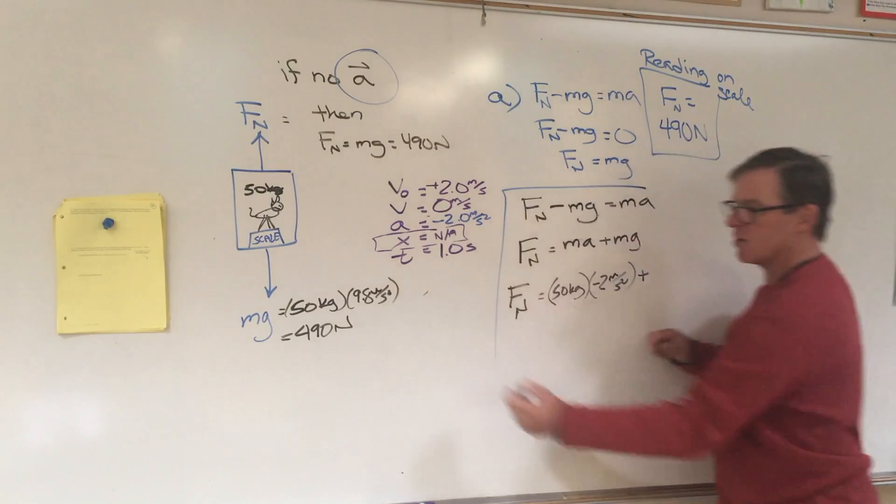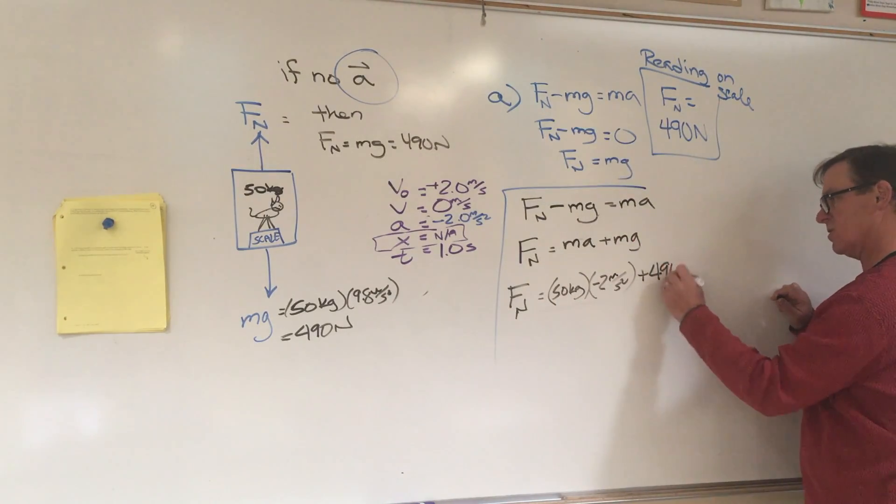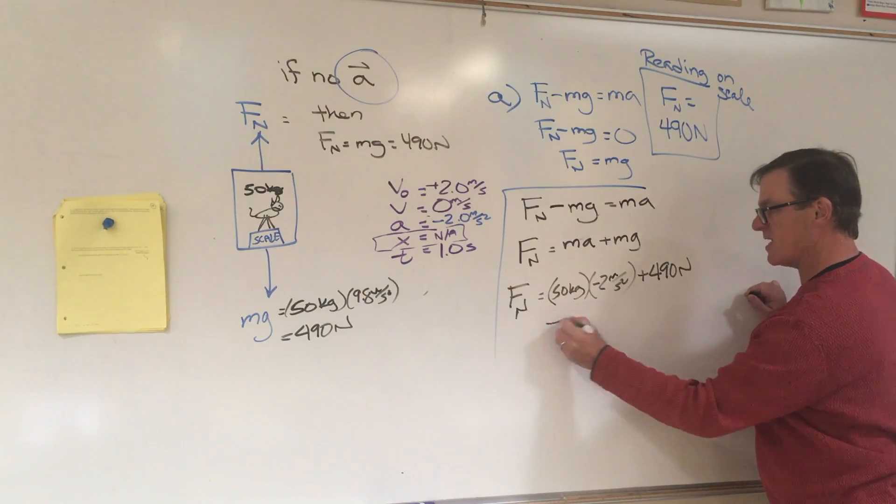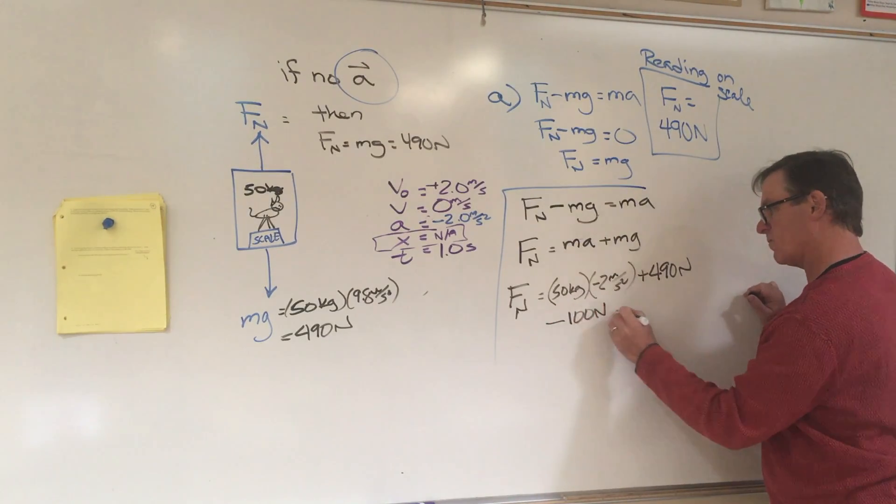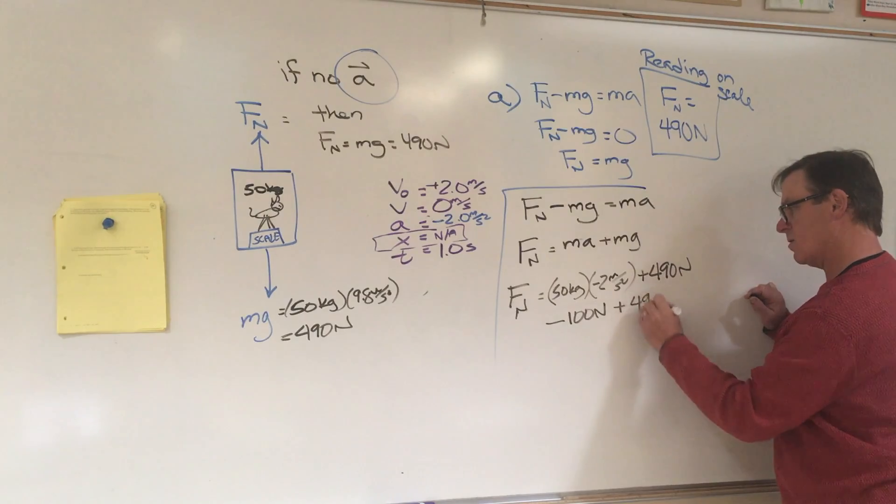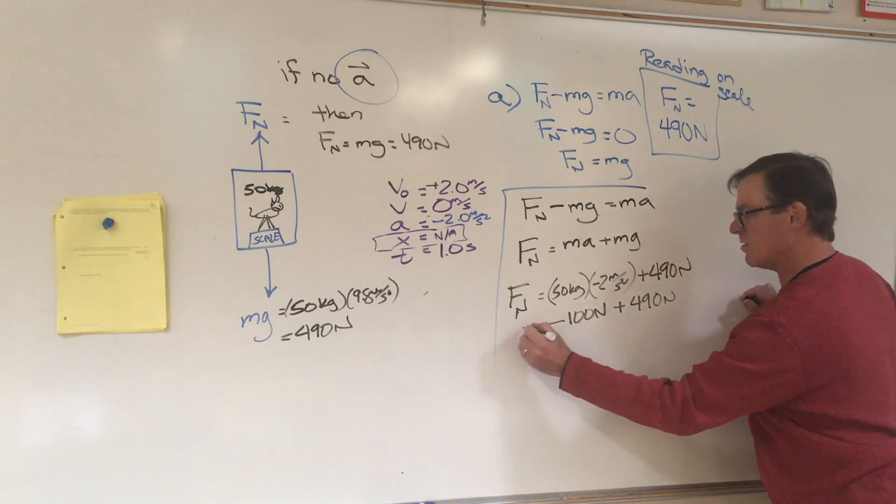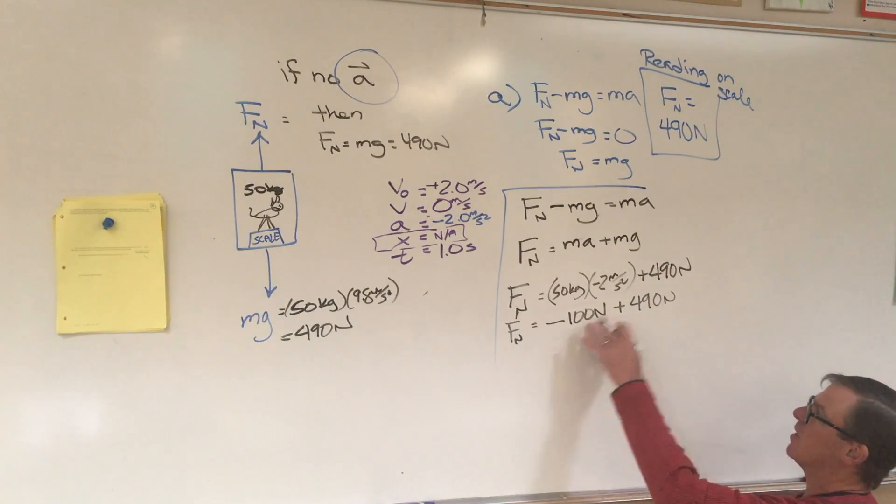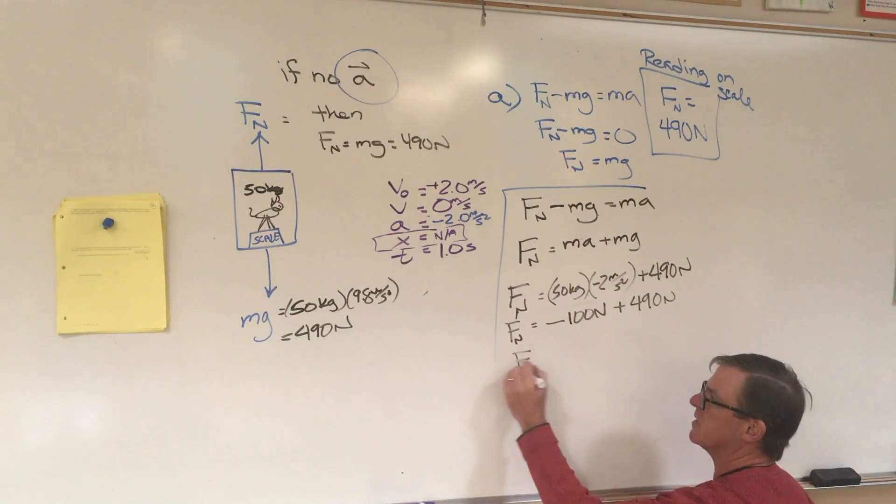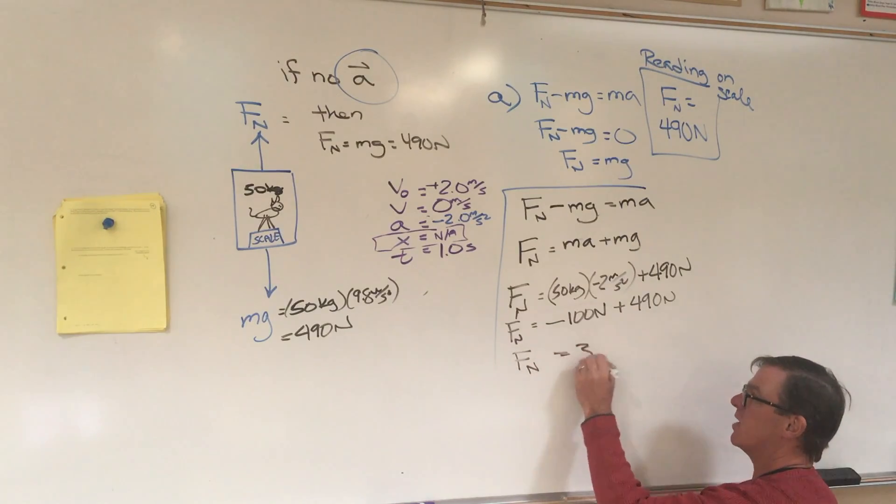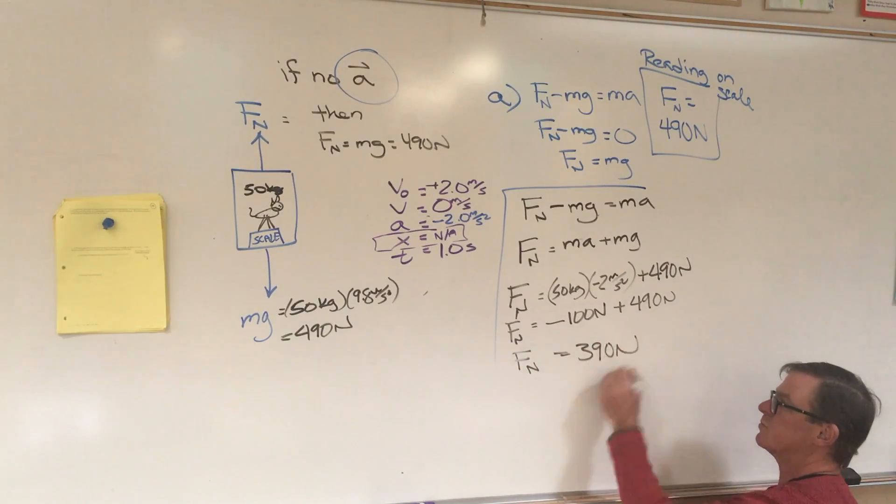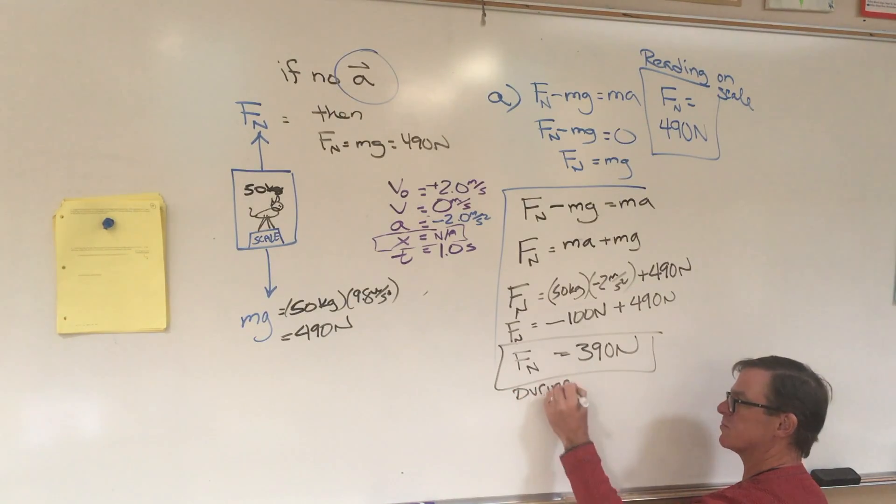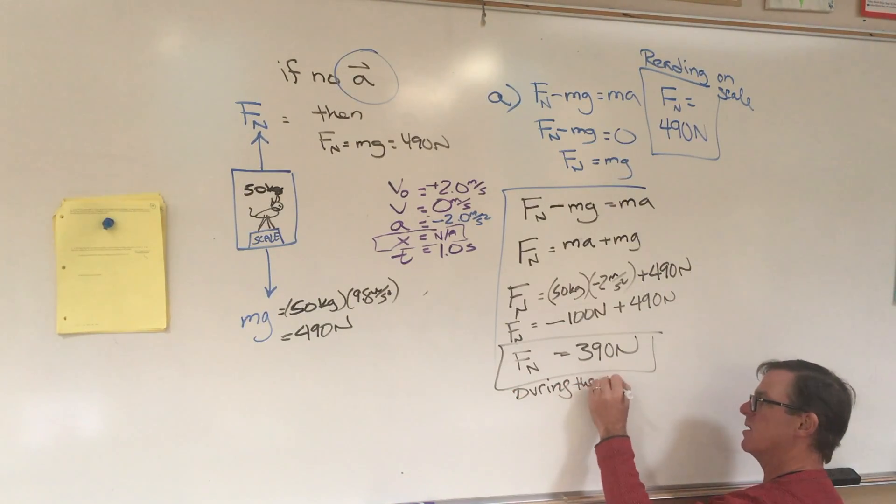Fn is equal to 50 times negative 2 meters per second squared, because that's the acceleration we calculated using our kinematics formula in equation number 1, plus MG. And I could calculate it again but we know it's 490 newtons. Negative 2 times 50 is negative 100. So the normal force exerted by the scale is negative 100 plus 490, which of course is 390 newtons during the acceleration.